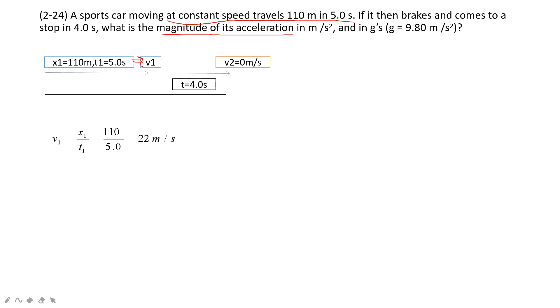So first step, find V1. V1, because this is constant speed, constant moving, x1 divided by t1. Then we get it, 22 meters per second.